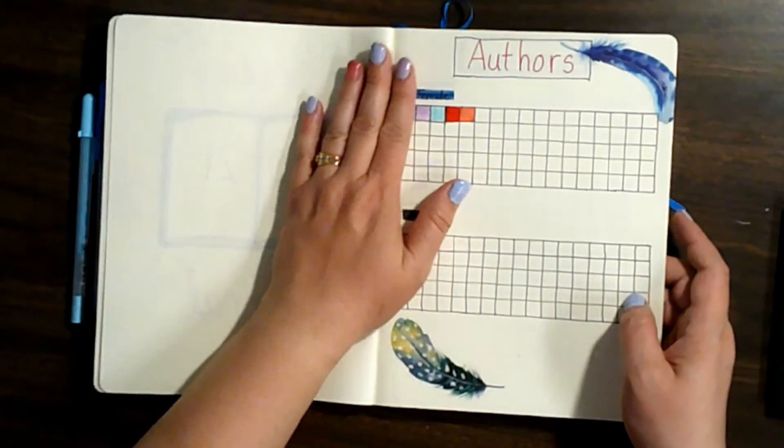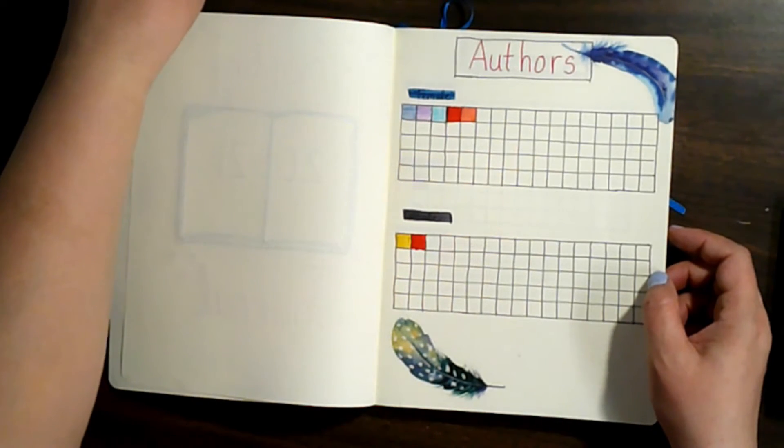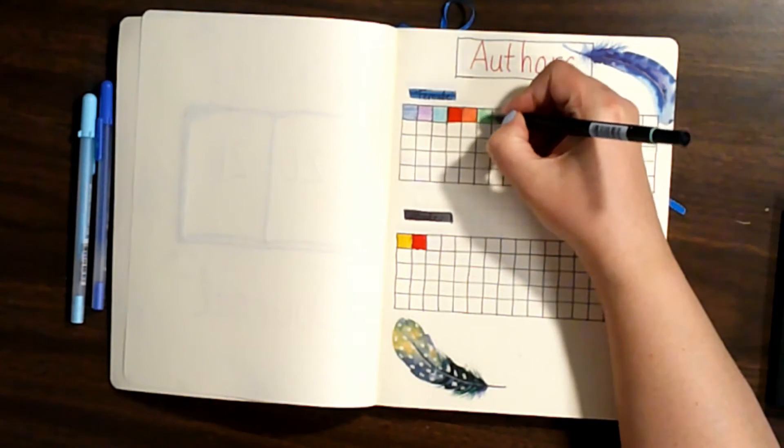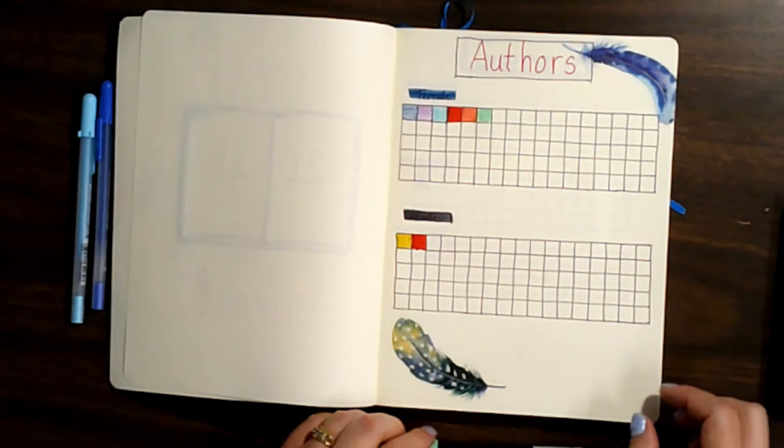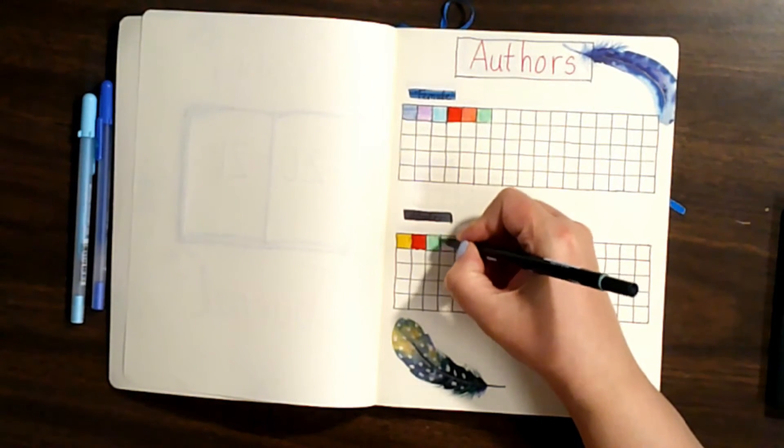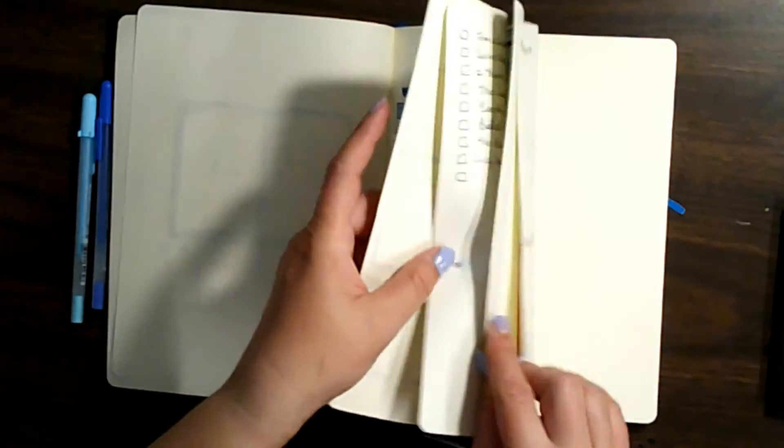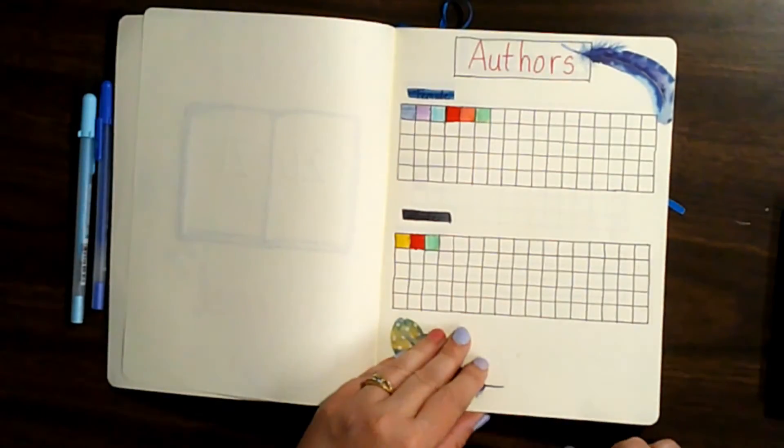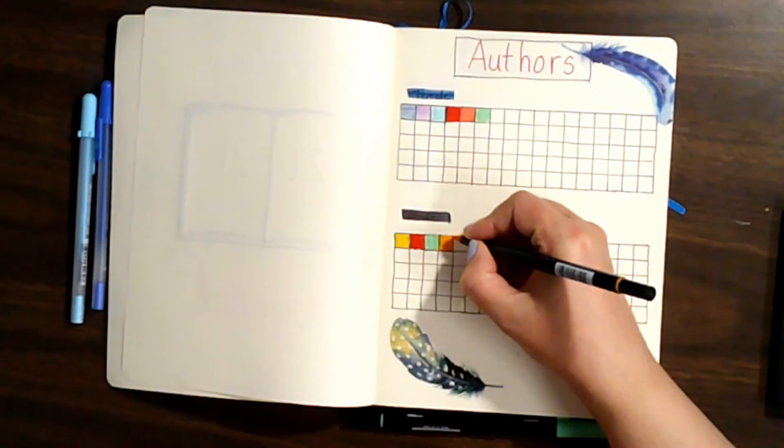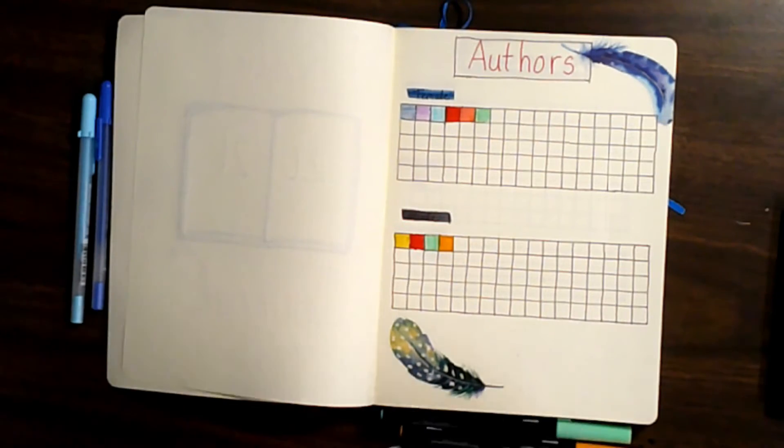And then we'll go through and color in the authors. So the first one I did was The Rose Garden by Susanna Kearsley. So that'll be a female one. And then we had Anxious People by Frederick Backman. So that is a male. And then we had, oh yeah, The Midnight Library, which was also a male author, Matt Haig. There's really no specific rhyme or reason to the colors I'm using for this, other than they kind of match the colors I used in the spread for that month.